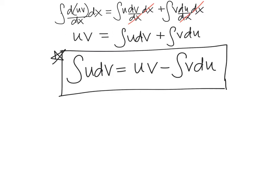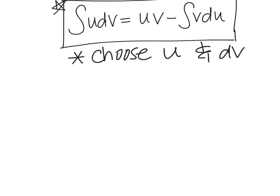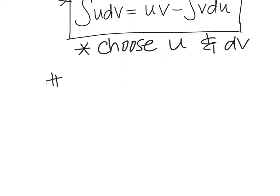Here's what you need to do: you're going to choose u and dv. Something in the integral is going to be u, and another part is going to be dv. I've got three examples, and then we also need to do tabular. This is part A — by parts. Number one.